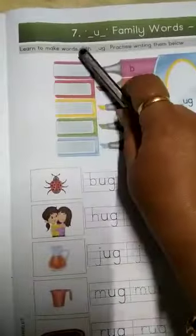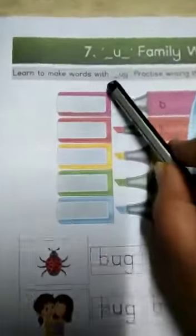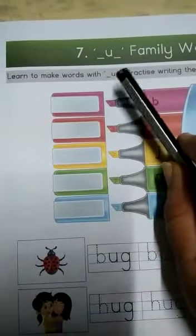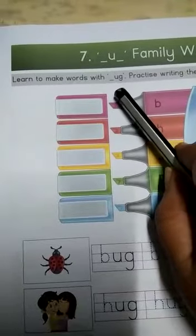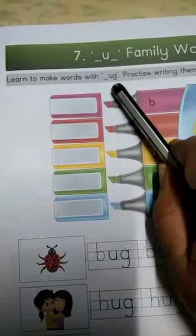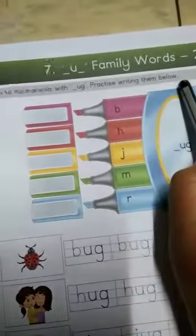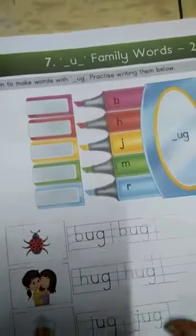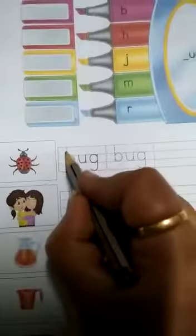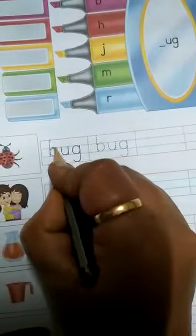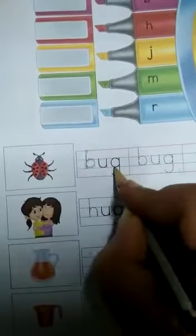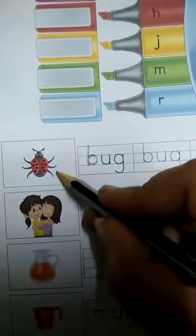Okay, now take page number nine, topic number seven, you family words part two. Learn to make words with UG blend. Blending sound is aga aga. Practice writing them below. B sounds buh buh aga bugger. We call this insect bug, buh aga bugger.